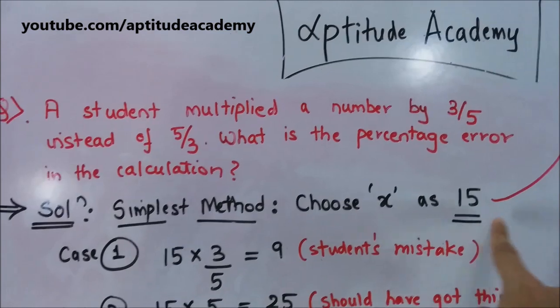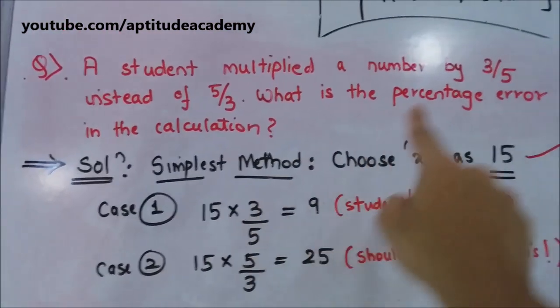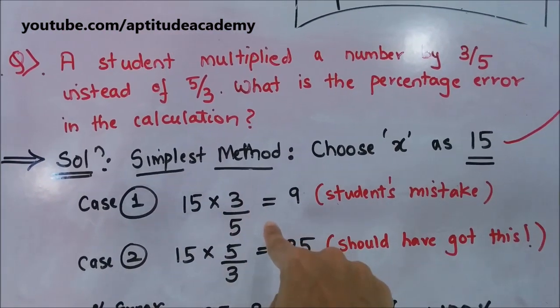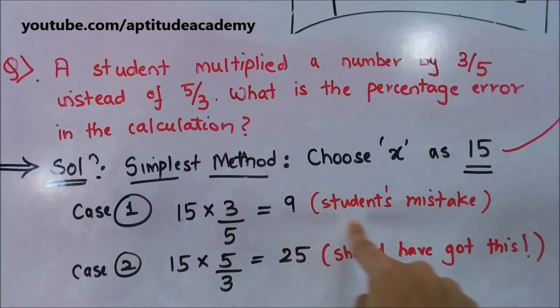We've chosen X as 15. Case 1: the student multiplied it by 3/5. So, 15 × 3/5 = 9. This is the student's mistake.